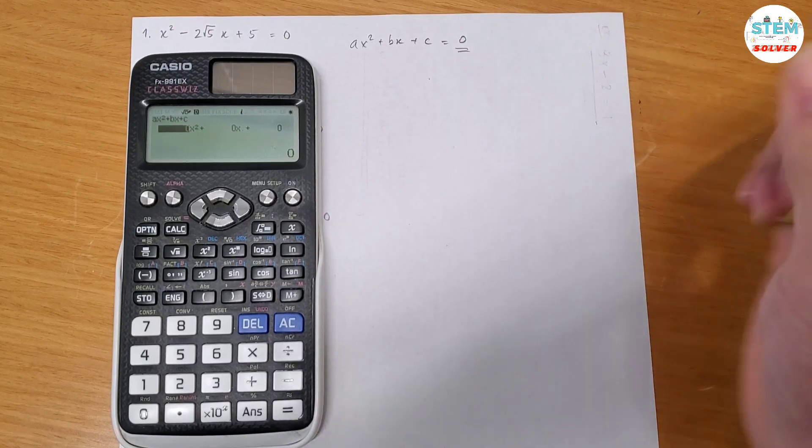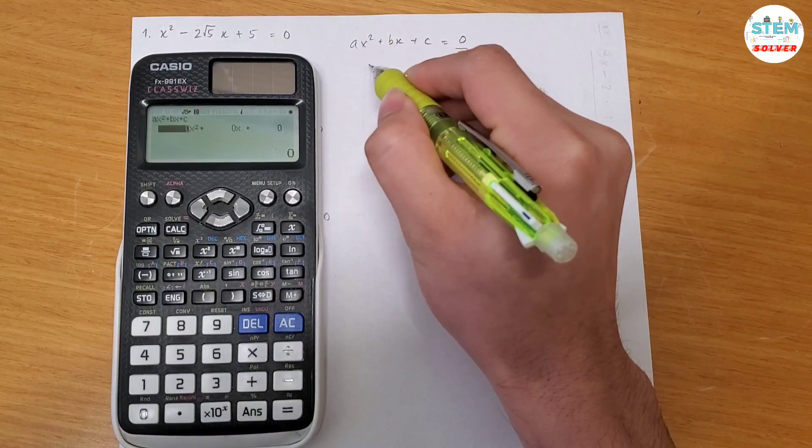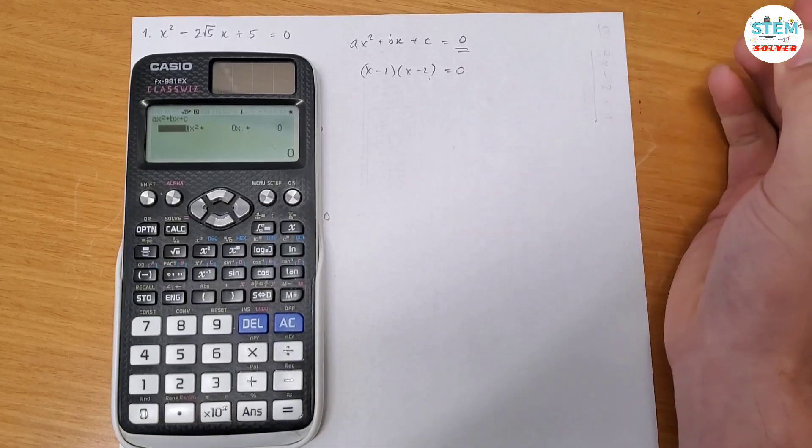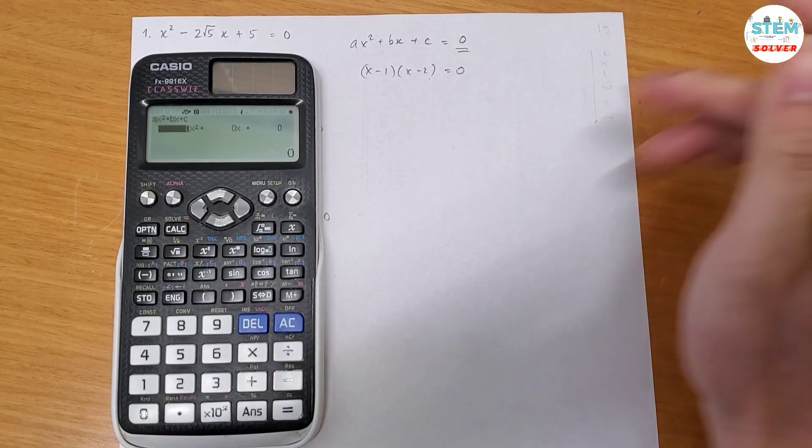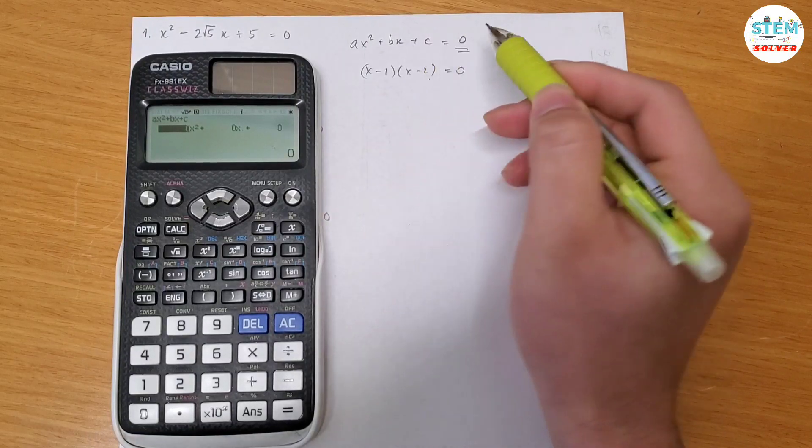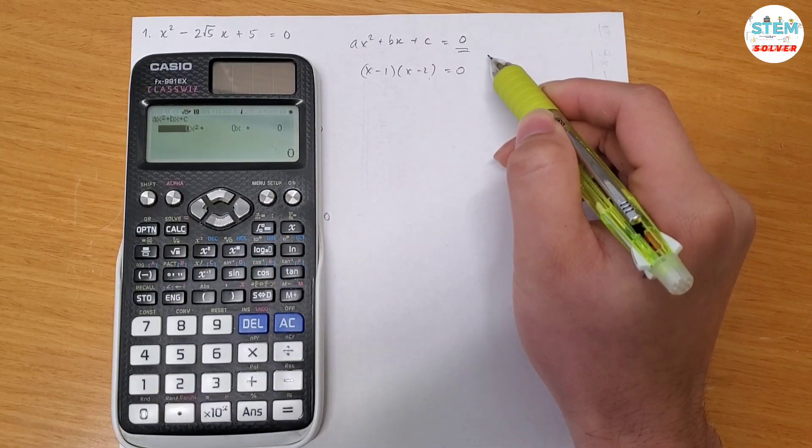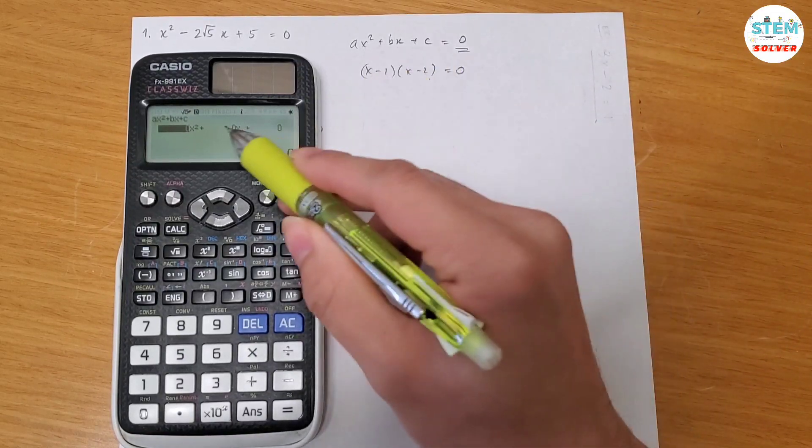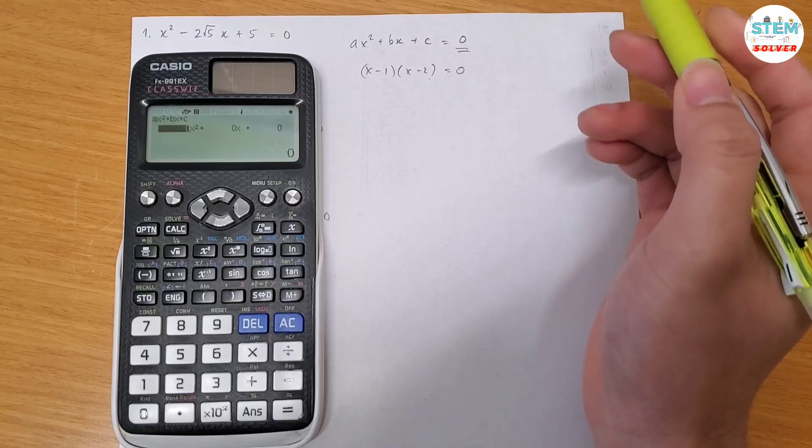So if you have a factor form, let's say (x - 1)(x - 2) = 0 or something, or a number, you have to distribute this out to get it in this form and on the right side has to be 0. Keep in mind that if you don't convert it into this form, this method won't work, alright?